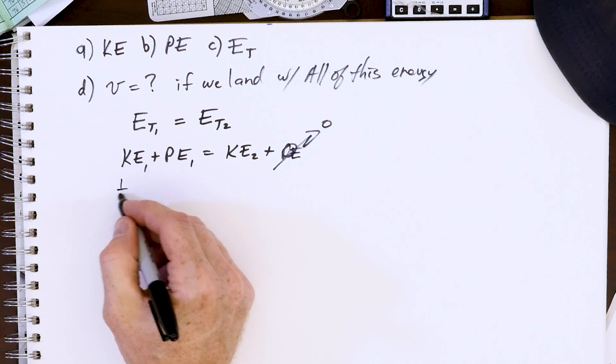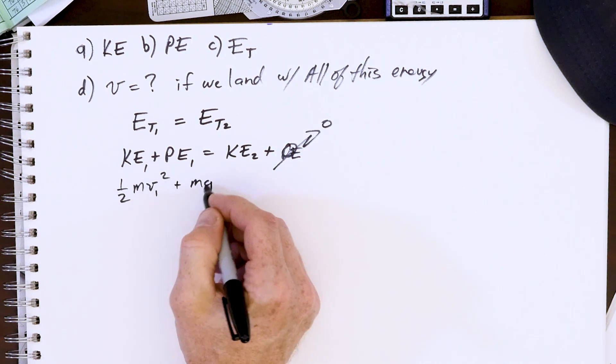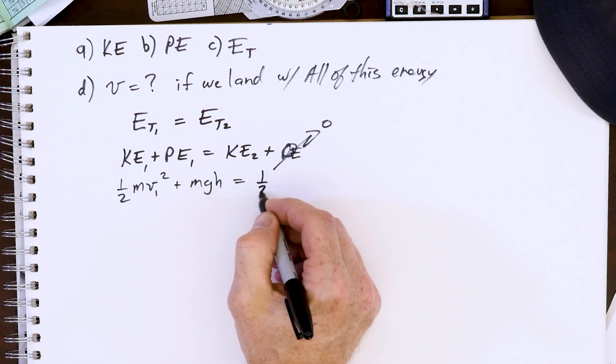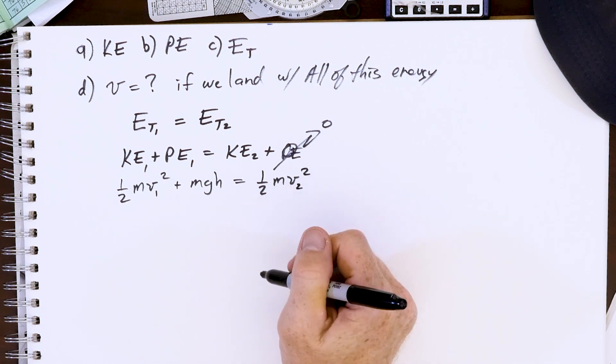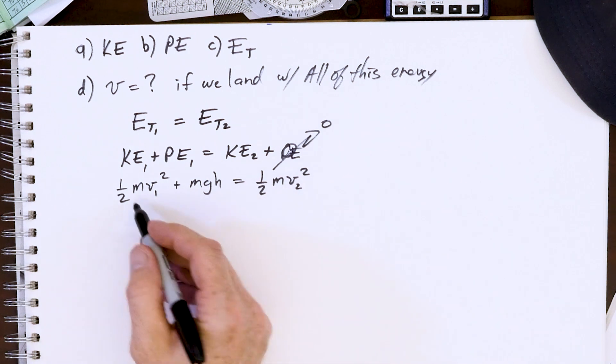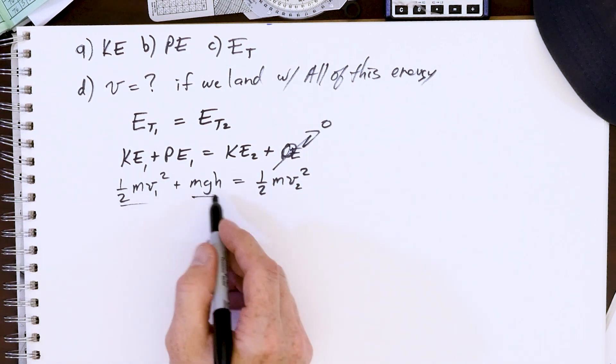Let's plug in. We have our ½mv₁² plus mgh equals our kinetic energy ½mv₂² on the ground. Now you could cancel all the masses, typically when you do that in physics, but since we have the numbers here I want to leave the masses in there.